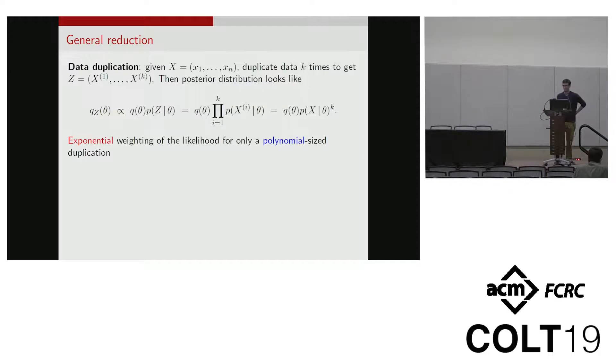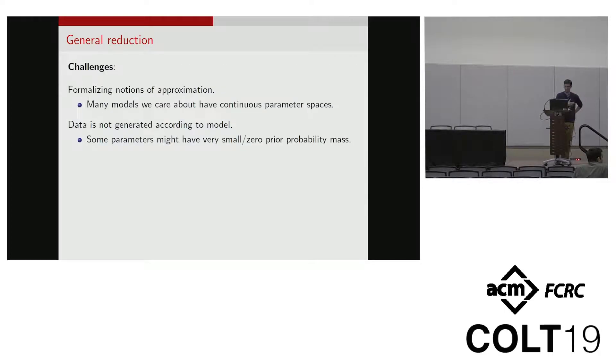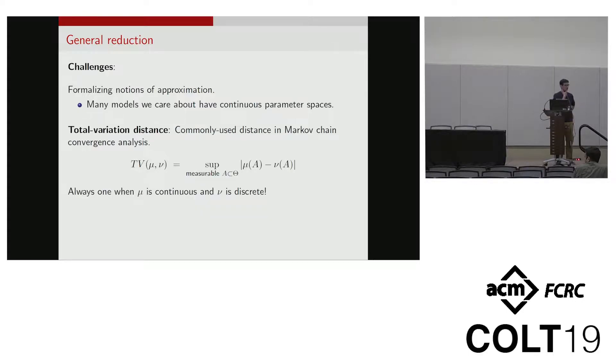That's great, but it turns out that there are some issues here that need to be addressed in order to make this a very formal reduction. The first one is that in general we care about these continuous parameter spaces. For example, for topic modeling or mixture of Gaussians, these parameters take on continuous values. We want to make sure that our reductions prove something and that these problems aren't hard because we're asking it to compute a real number, but rather because they're intrinsically computationally hard. You can really see the issue when you look at approximating distributions with discrete distributions.